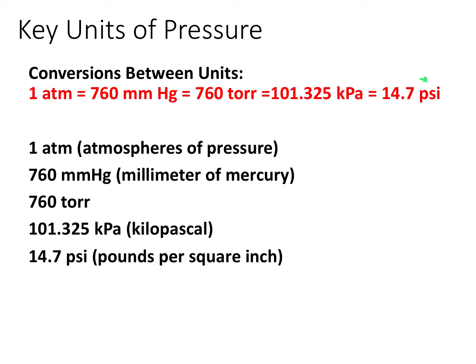There are several main units you need to know and memorize. Atmospheres of pressure is represented by ATM. Millimeters of mercury is represented by mmHg. Torr is just torr. Kilopascal is kPa. And psi, or pounds per square inch, is another unit of pressure you need to know. All of these are interconvertible: there are 14.7 psi for every 101.325 kPa, and we can use this relationship to convert between pounds per square inch and kilopascals.